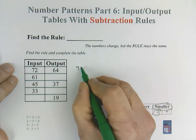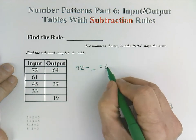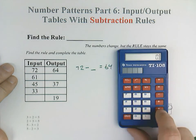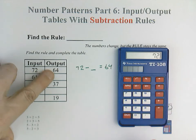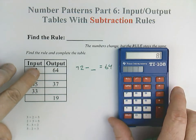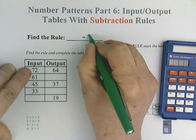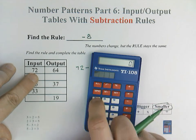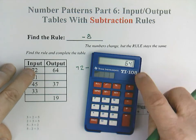So 72 minus blank equals 64. But because of our fact families, we can swap that out. So I'm going to actually go 72 minus 64. So we have a minus 8 rule. I'm going to prove it to you. Let's do 72. Let's make sure minus 8, and it should equal 64. Yep, there we go.